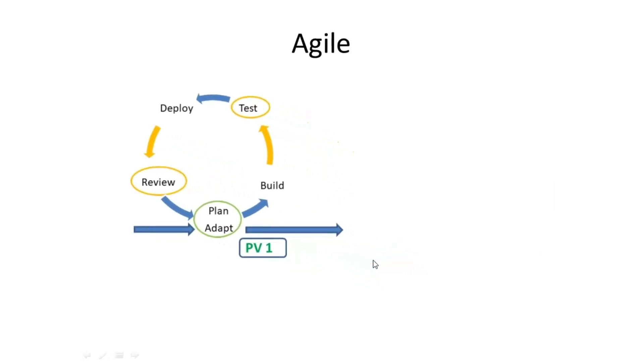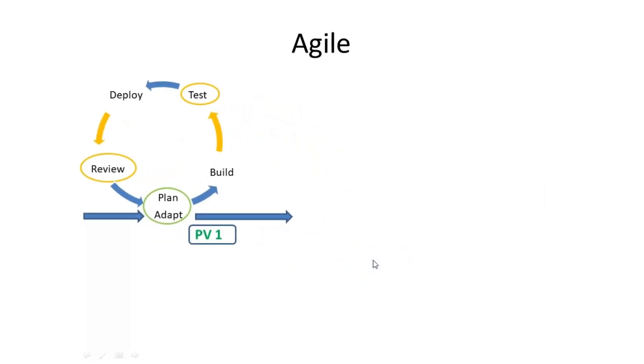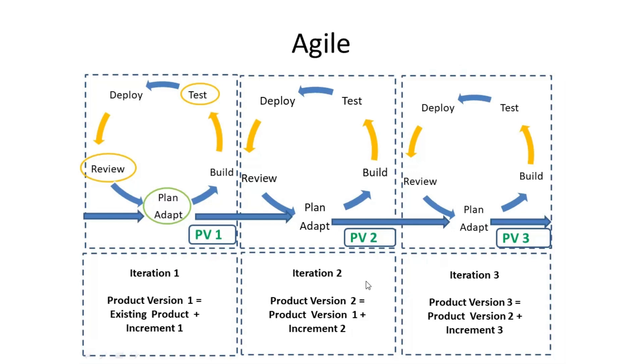Let us discuss the iterative and incremental nature of Agile. Here it shows how the final version of the product, that is product version 3, is evolved iteration by iteration. It is an outcome of three iterations and at the end of each iteration a new version of the earlier product is developed and delivered. And this new version of the product is existing product plus the new increment. It gives opportunity to validate the hypothesis by having small incremental releases.